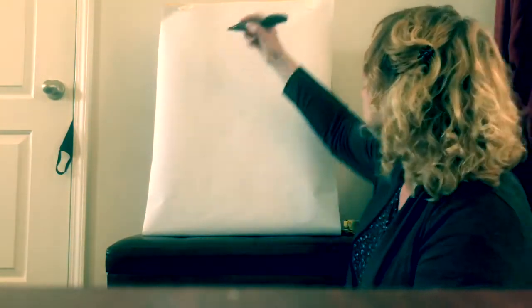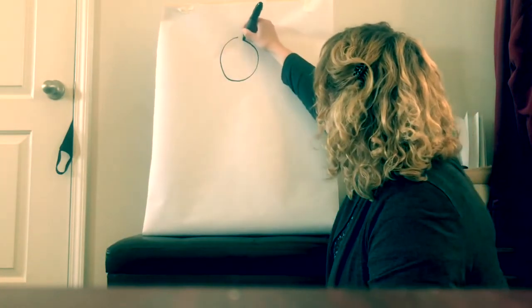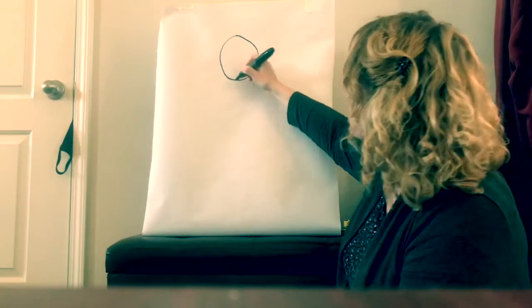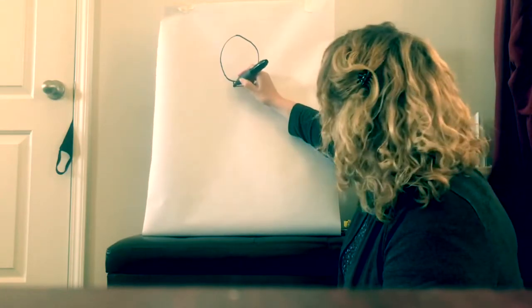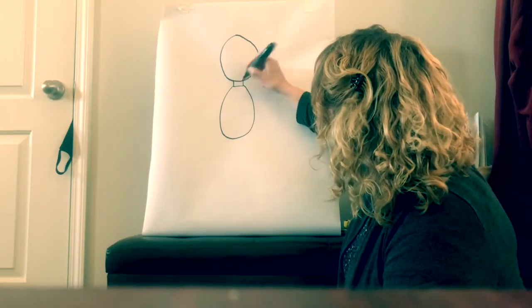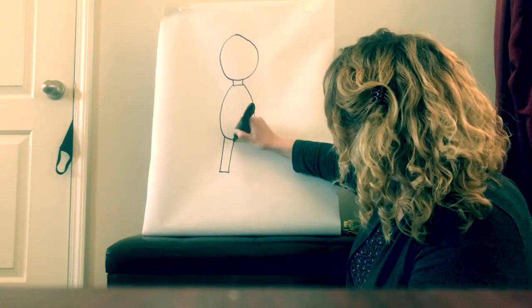I'm going to draw a circle or an oval for his head. And then we need a neck. And then I'm going to draw an oval for his body. And two rectangles for his legs.